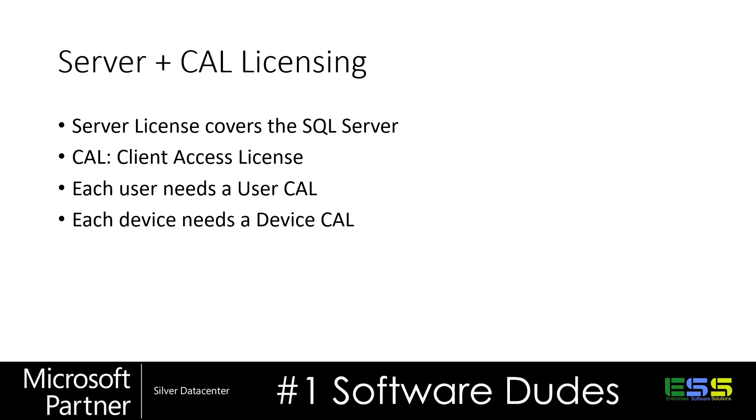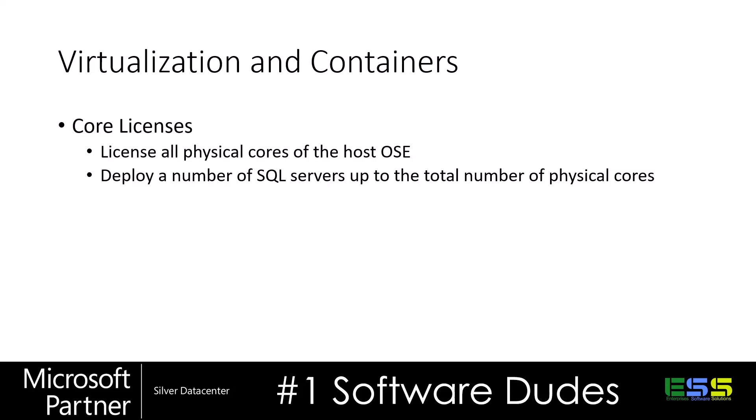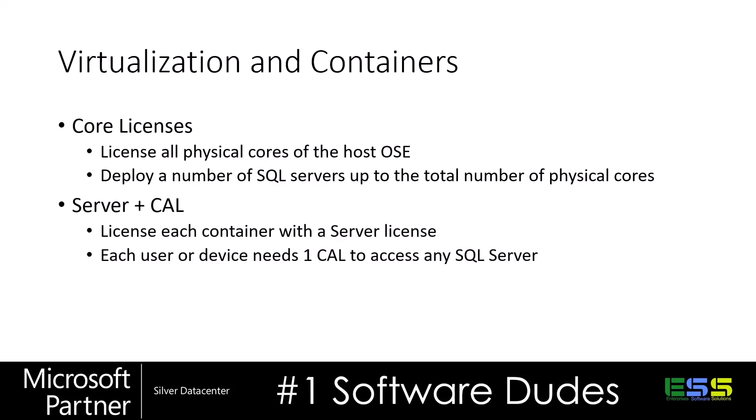Always compare the cost to core licensing — sometimes it's a simple comparison, sometimes it's not. When virtualizing SQL Server, core licenses can apply to the physical cores of a physical host OS. If you license all cores of the host, you can deploy as many SQL servers as you have physical cores on that box, allowing you to overprovision processors — though you'll still be limited by the hardware. In a Server CAL model, you still have to license each virtual machine or container with a server license; however, one user with one CAL can access any of your SQL servers, so you don't have to license each user multiple times.